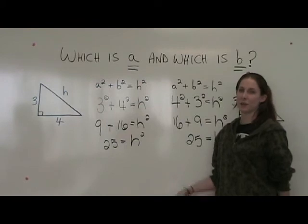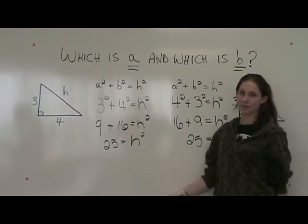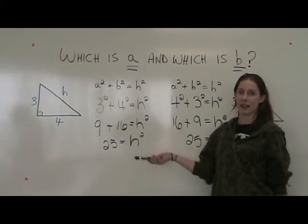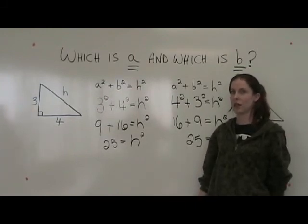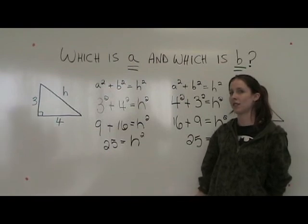As you can see, either way we end up with 25. This proves that it does not matter which one is A and which one is B. All that really matters is that you are able to correctly identify which is the hypotenuse H.